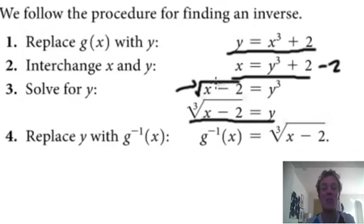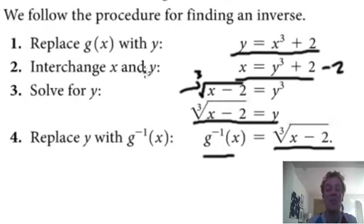So I'm going to cube root this as well. All right? And that's what I've got there. So this is the inverse. Again, instead of y, write the inverse notation. But it is the cube root of x minus 2. OK? That's the inverse.